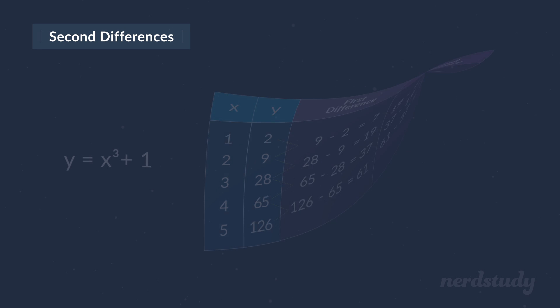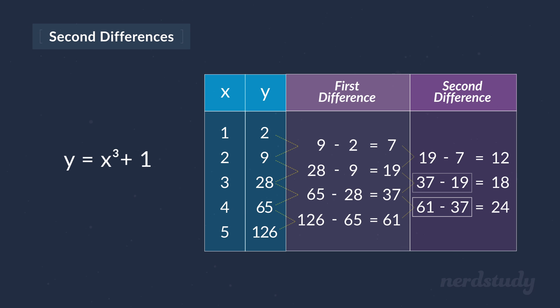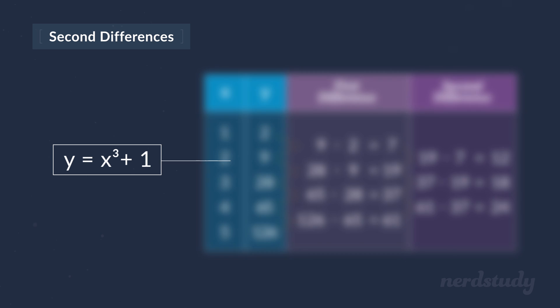So if you calculated the second differences properly and all the values are not the same or constant, then the equation is definitely not a quadratic relation.